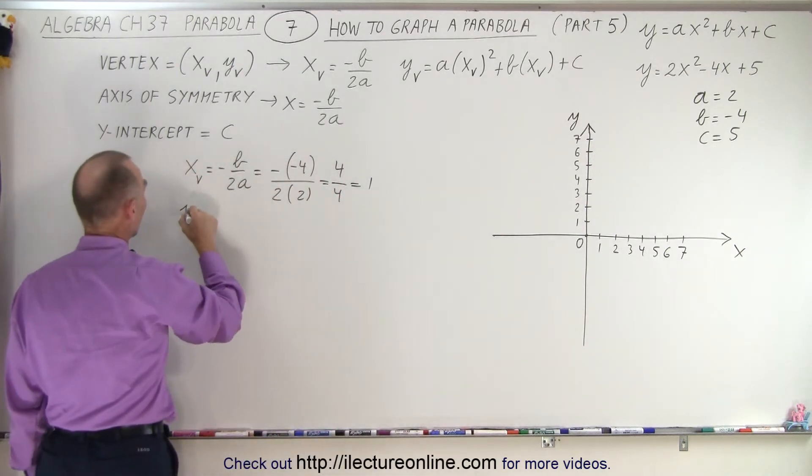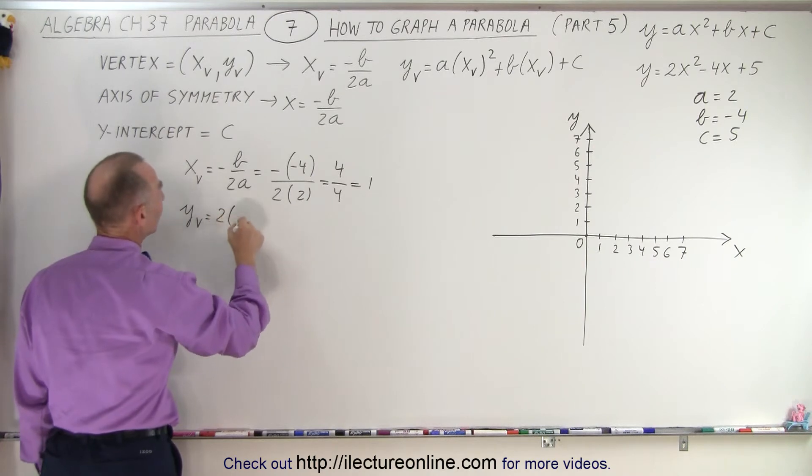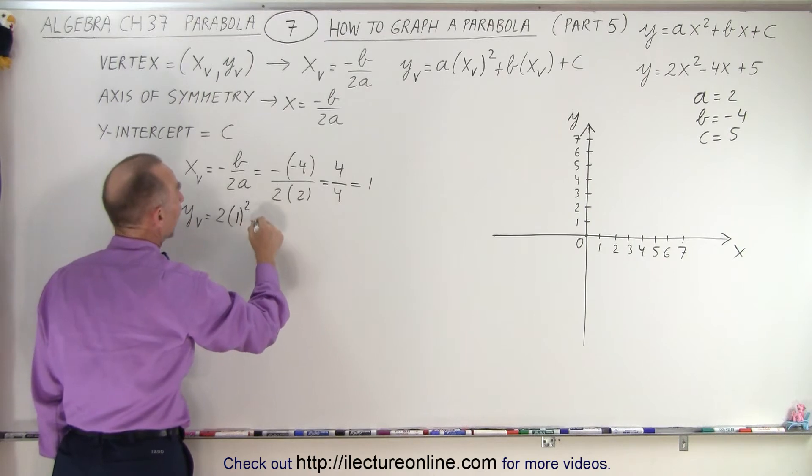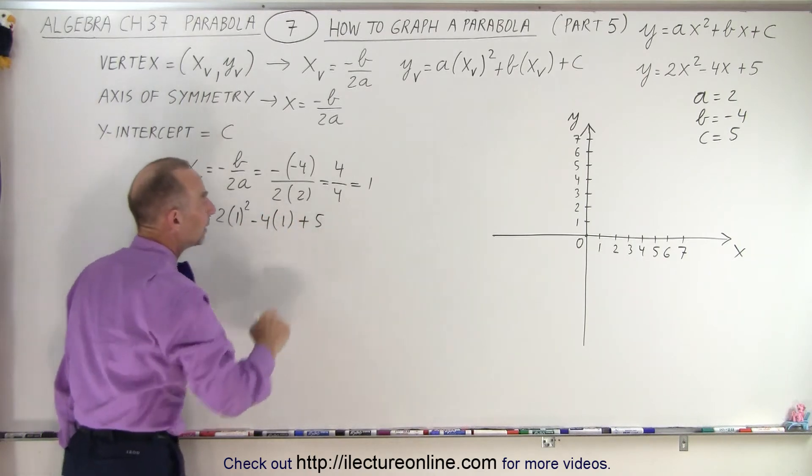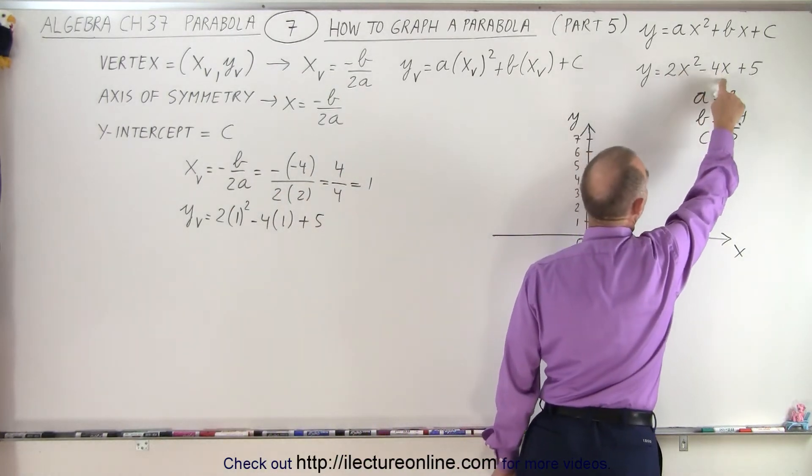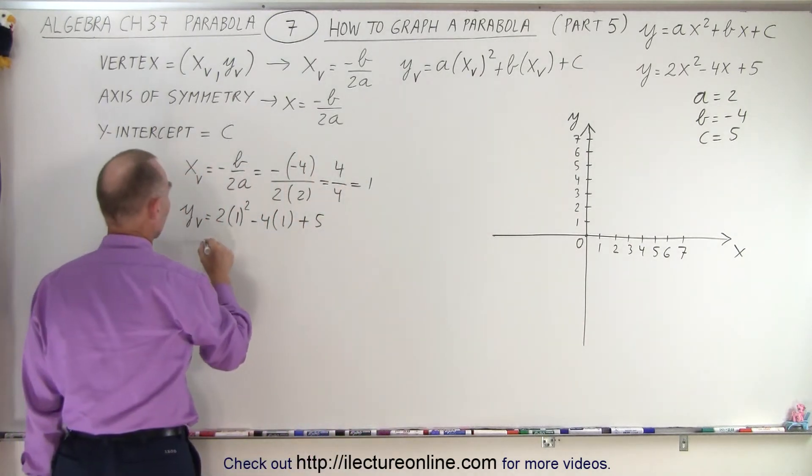That means that y-sub-v is equal to 2 times x-squared, and x, of course, is going to be equal to 1, so 1-squared minus 4 times x, which is 1, plus 5. So all we did was plug in the value for x equal to 1 here and here to find the y-coordinate of the vertex. So in this case, that's equal to,